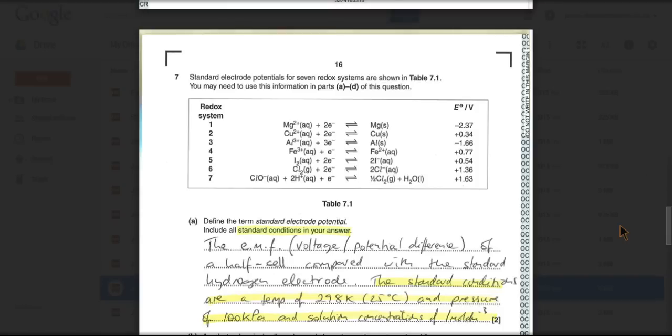Question 7 is a standard electrode potentials question. First part of the question, fairly typical, give the definition for the standard electrode potential.